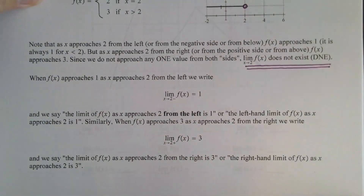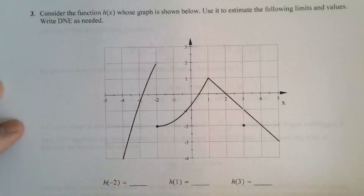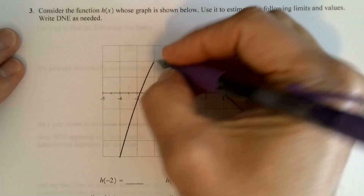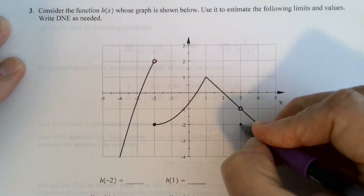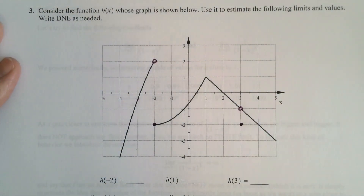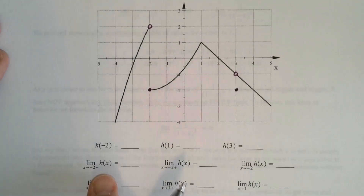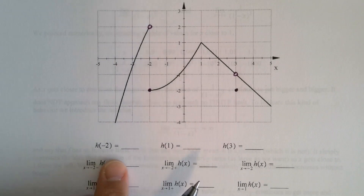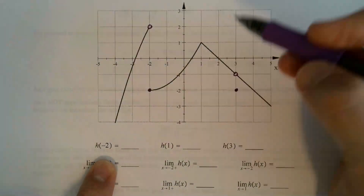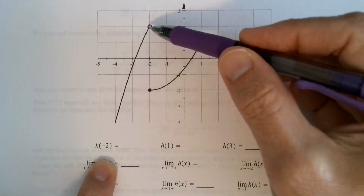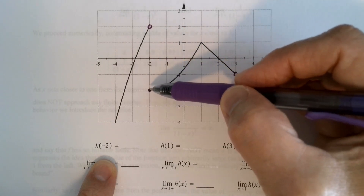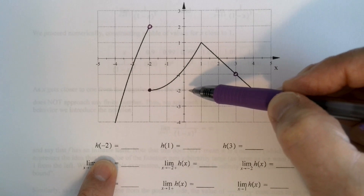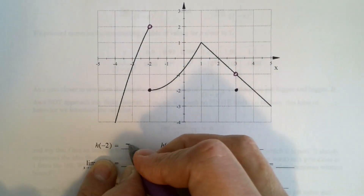Here's the graph of the function h of x — it has holes, breaks, and jumps. We'll use it to estimate limits. First, values. What is h of negative 2? At negative 2, there's an open circle there, so we go down to the actual point, and the y value is negative 2. So h of negative 2 is equal to negative 2.